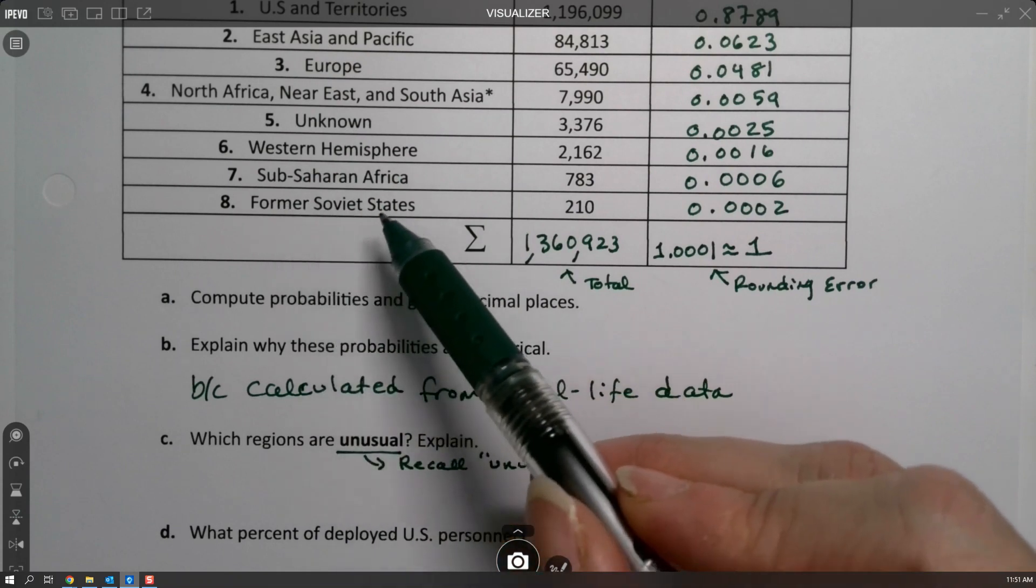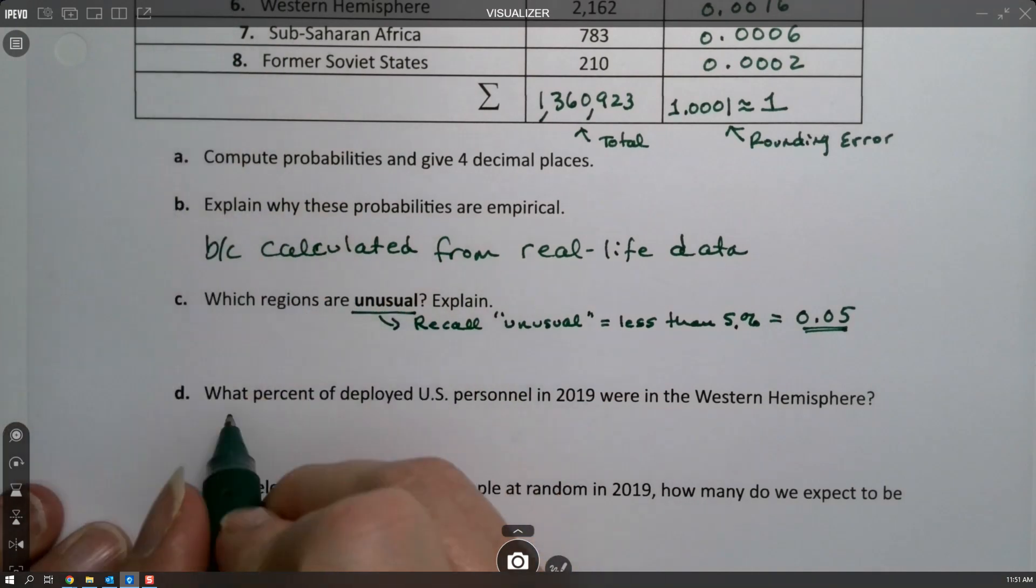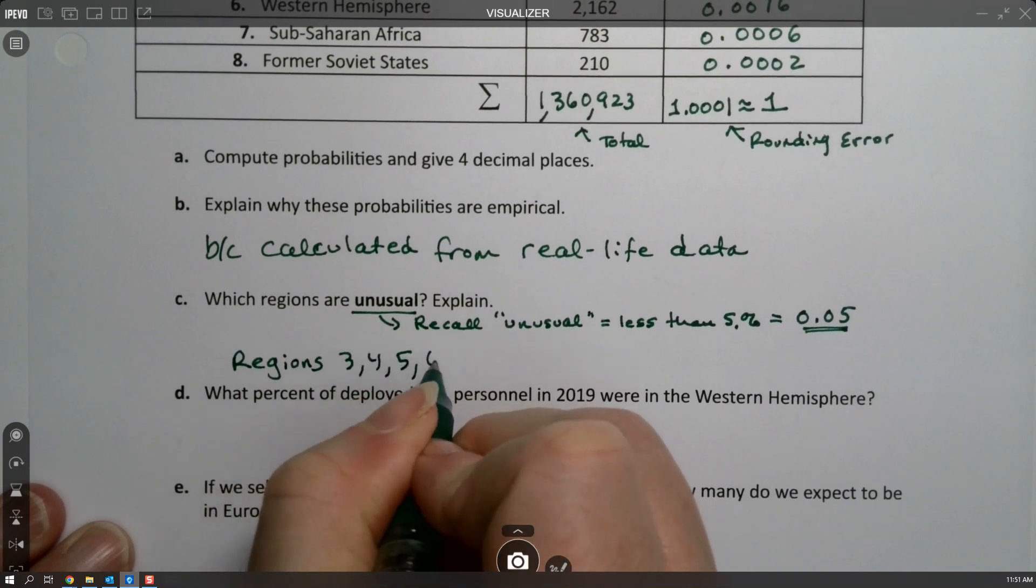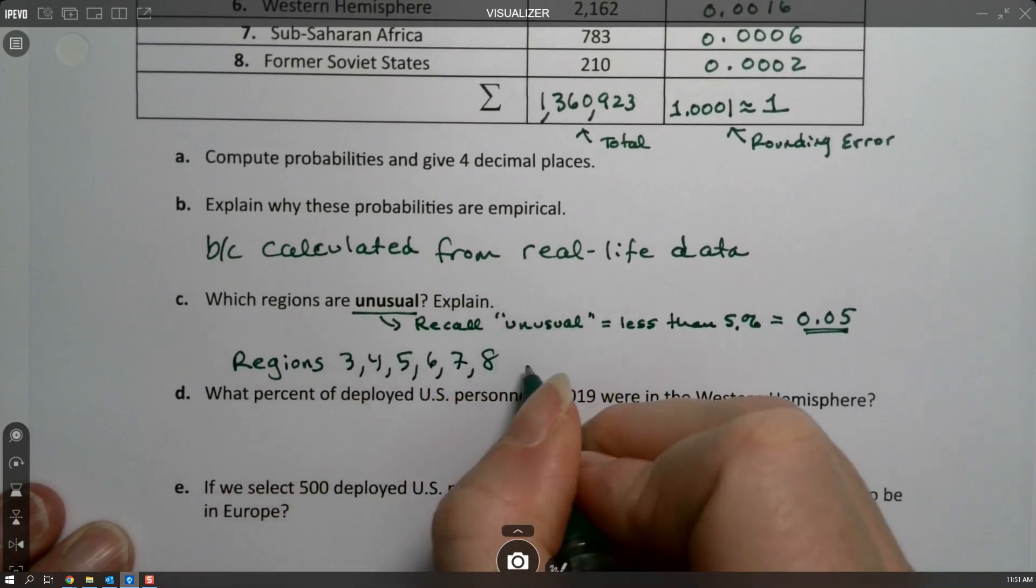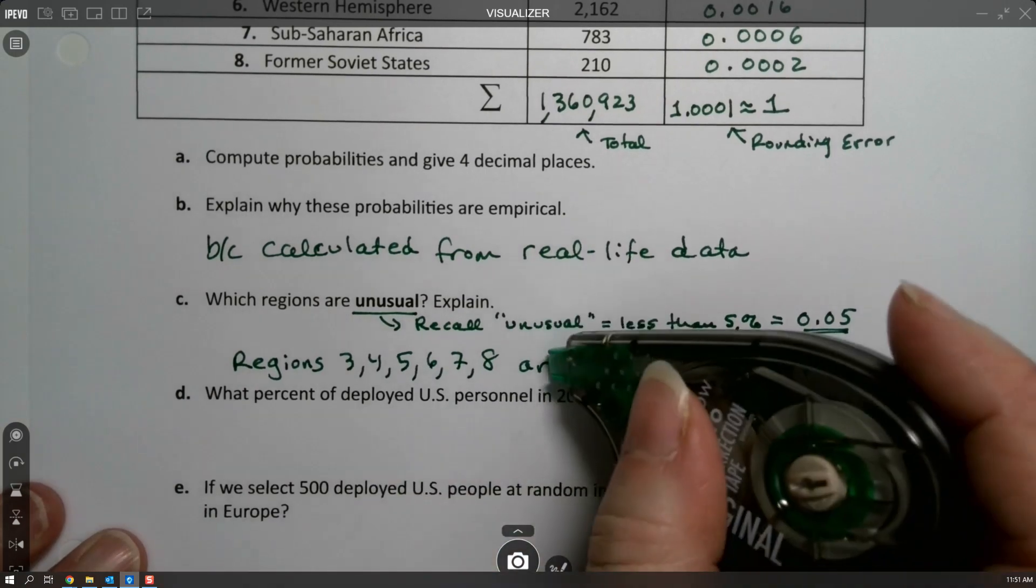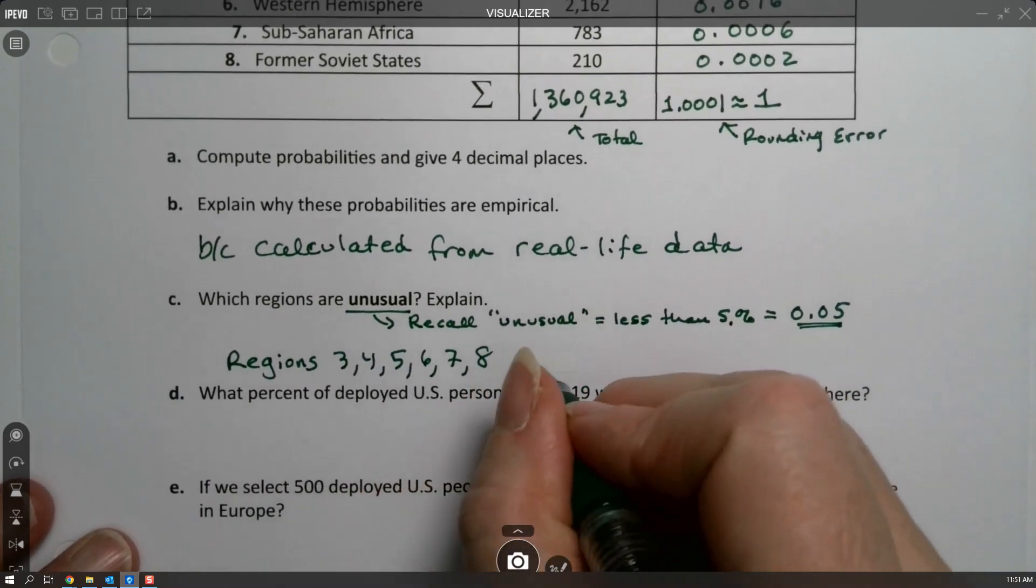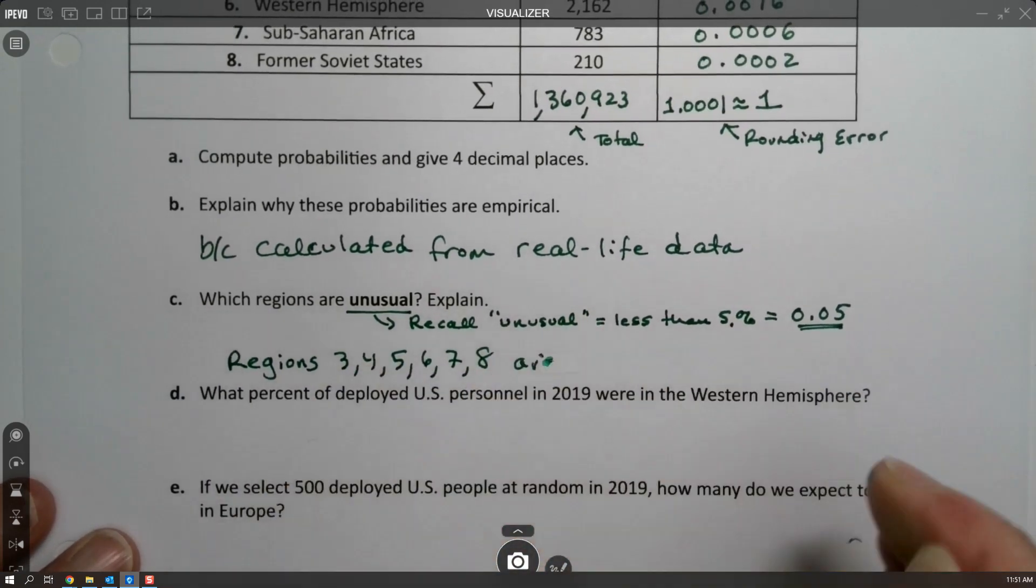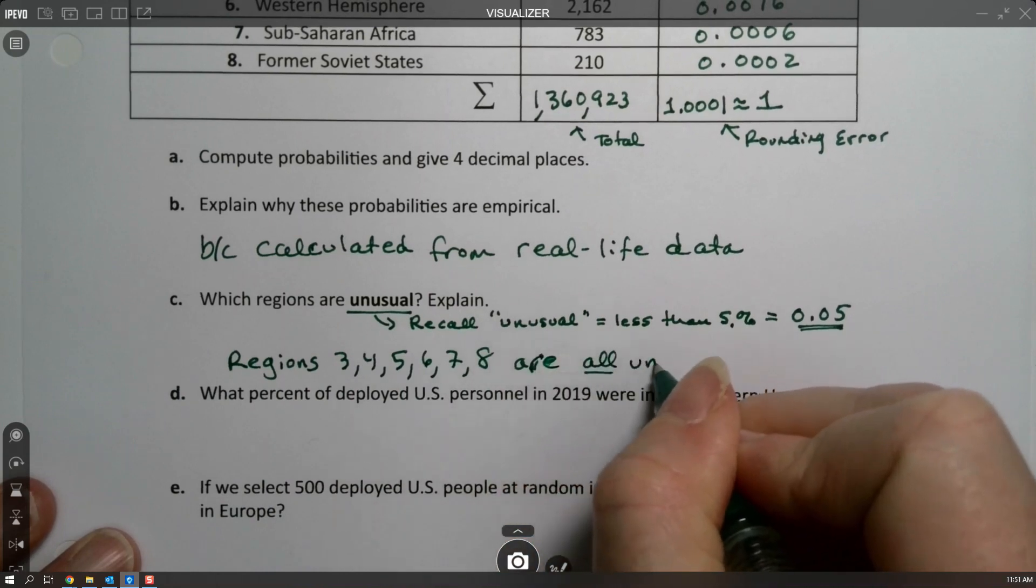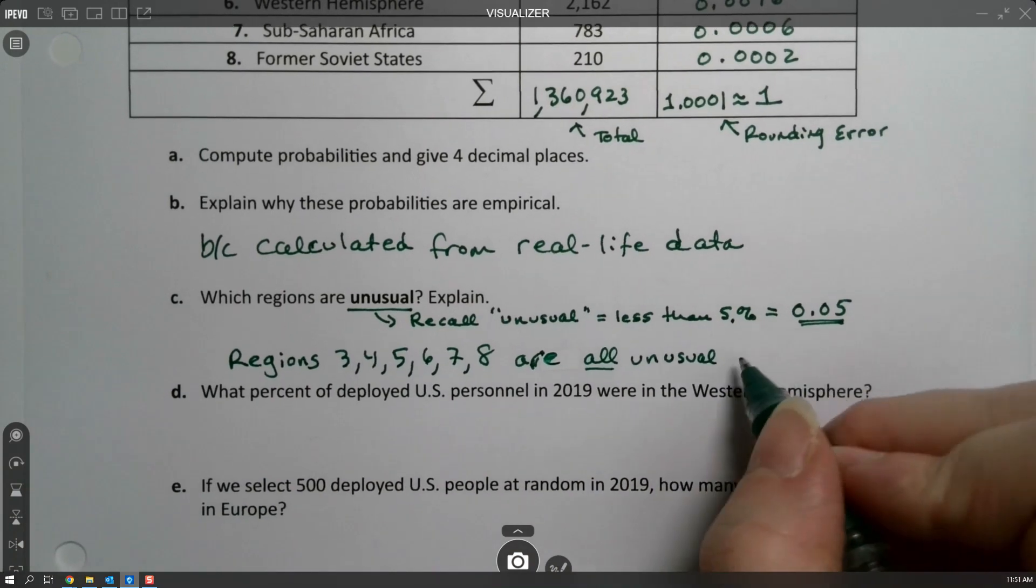Everything from Europe, North Africa, Unknown, Western Hemisphere, Sub-Saharan Africa, Former Soviet States - all of them. I'm just going to call them regions 3, 4, 5, 6, 7, 8 because it's easier. Regions 3, 4, 5, 6, 7, 8 are all unusual because they have less than 5% probability, less than 0.05.